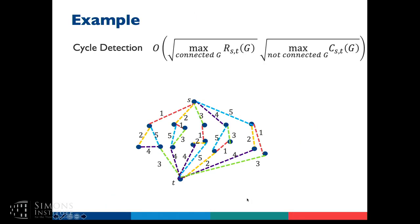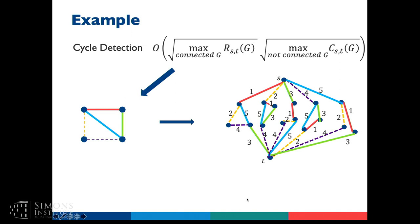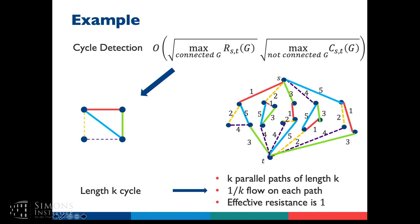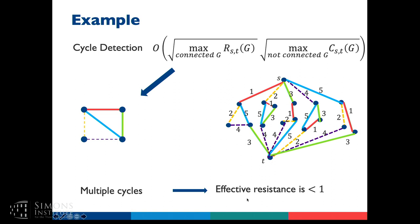Now let's analyze how well our quantum algorithm does on the cycle detection problem. We want the worst effective resistance and the worst effective capacitance. For a cycle with k edges, we have k parallel paths of length k. The optimal flow assigns 1/k to each path. When we square that and sum over all edges, the worst-case effective resistance is always 1 for a single cycle. If there are multiple cycles, that actually lowers the effective resistance further because there are more paths for the flow to take.